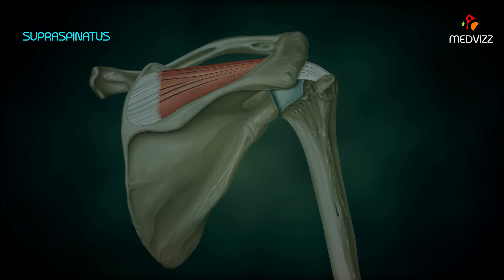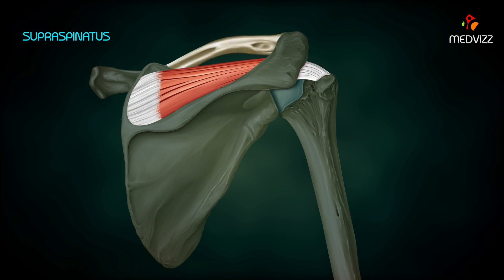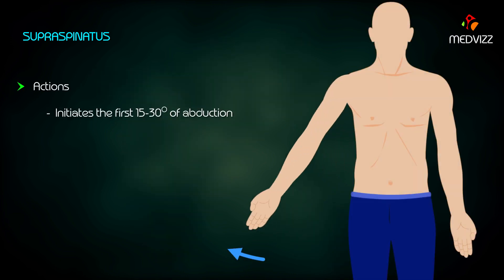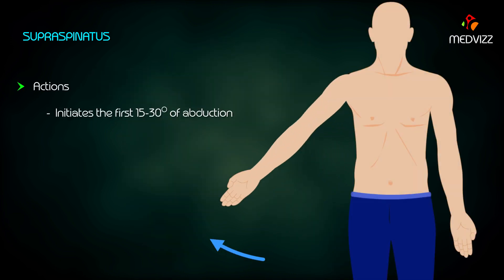Supraspinatus: It originates at the medial two-thirds of the supraspinous fossa of the scapula. It passes laterally beneath the coracoacromial arch and inserts into the upper part of the greater tubercle of the humerus. Its actions are to initiate the first 15 to 30 degrees of abduction and to help stabilize the shoulder joint.